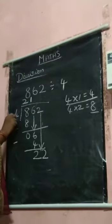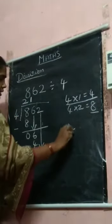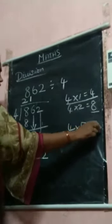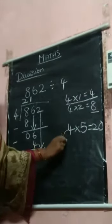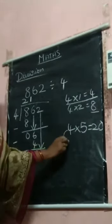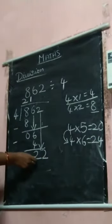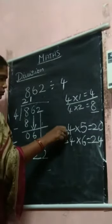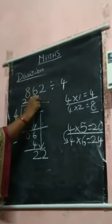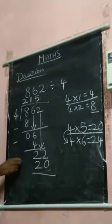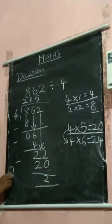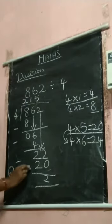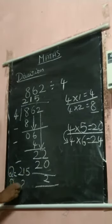22 is a 2-digit number. You start from 5. 4 5's are 20. 20 is smaller than 22, so go down. 4 6's are 24. 24 is bigger than 22, so you go back up. 4 5's are 20. Subtract: 22 minus 20 is 2. Quotient is 215, remainder is 2.